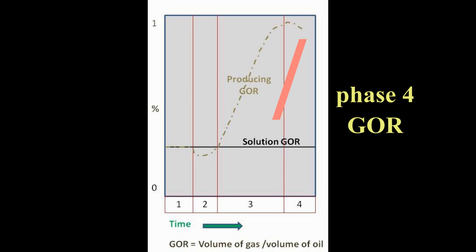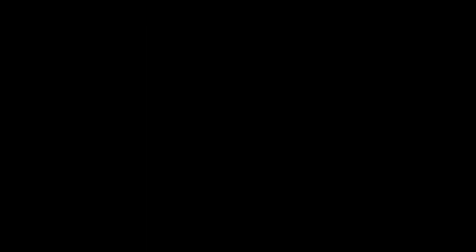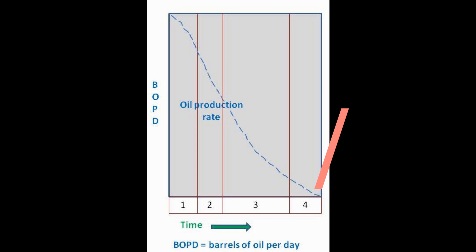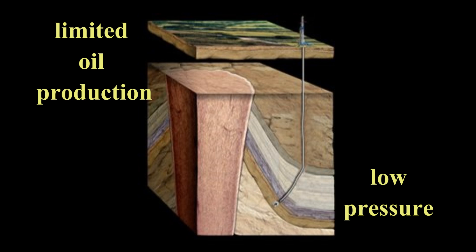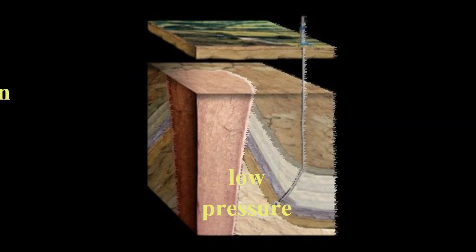In phase four, the producing GOR turns downward on the graph. The remaining oil has been depleted of its solution gas. It is at this point the production declines to its economic limit. Since there is very limited oil production with low pressure, this well will most likely be abandoned.